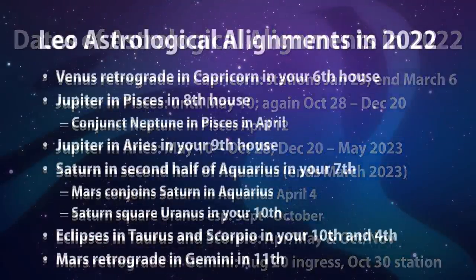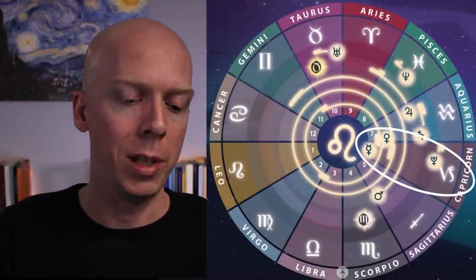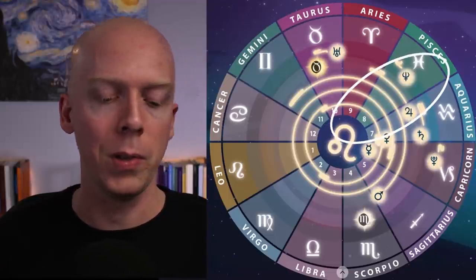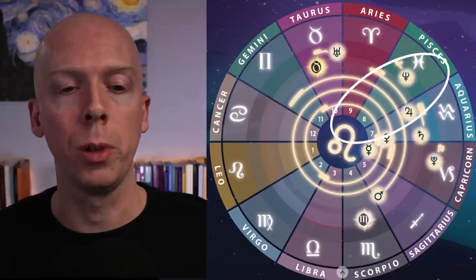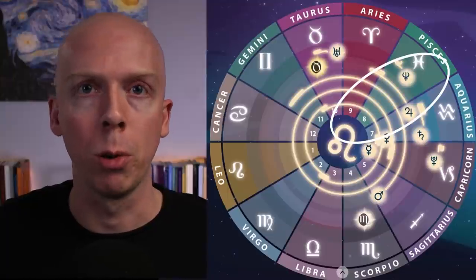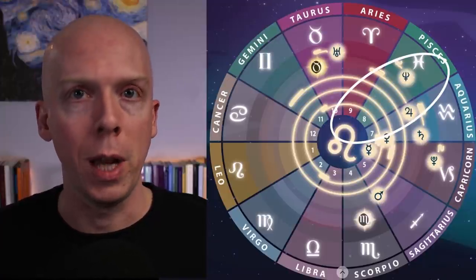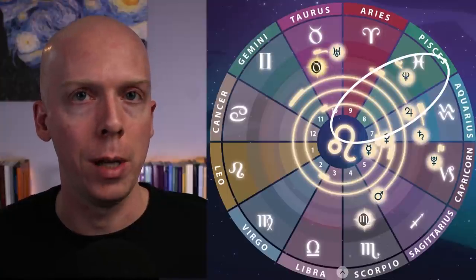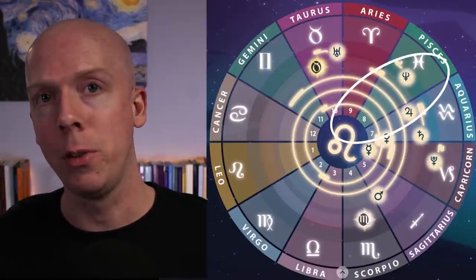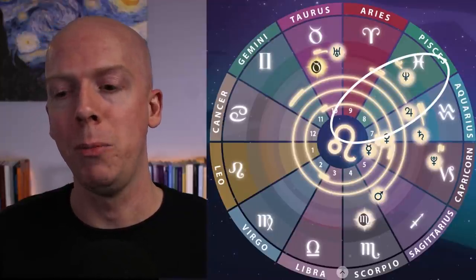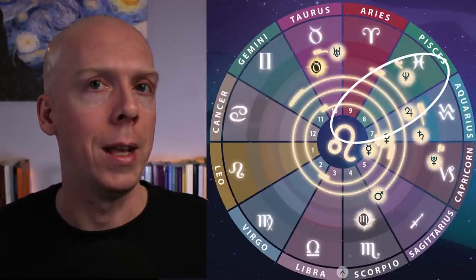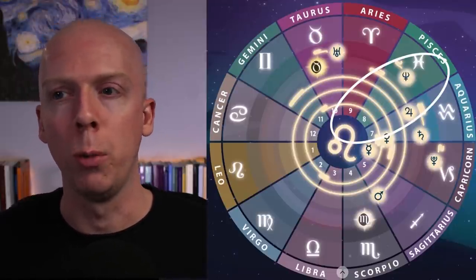The second transit to move to something more positive is Jupiter is going to ingress into Pisces and into your eighth house of other people's money, finances, inheritance, sometimes debt. Generally speaking, Jupiter into the eighth house is usually a relatively positive transit for financial matters, and it could indicate some sort of sudden windfall coming from other people around you. Sometimes this can be things like an unexpected bonus at work, a tax break, or some sort of major tax refund.